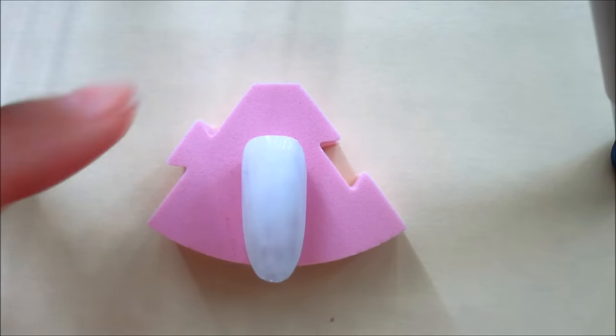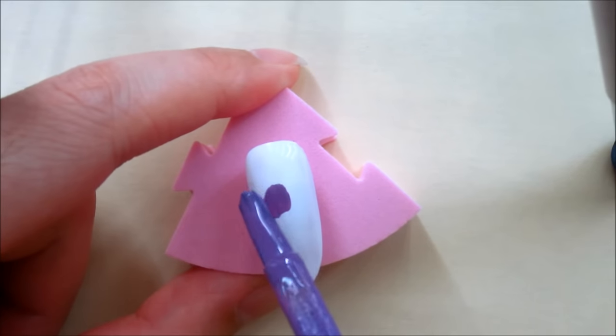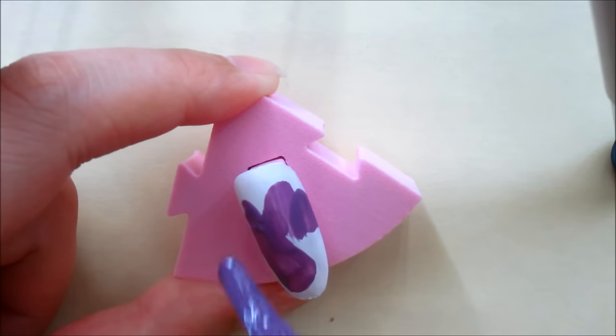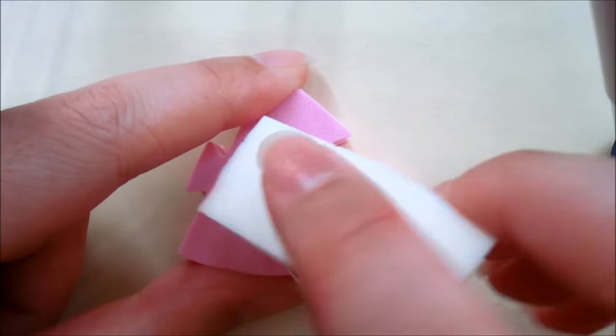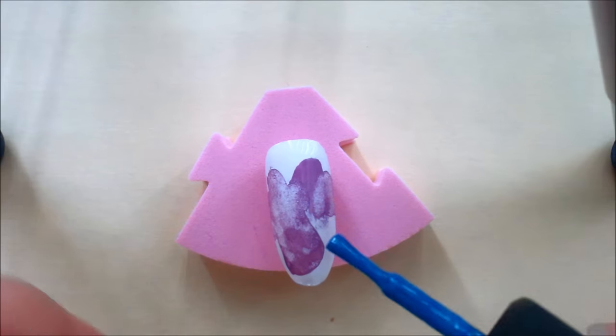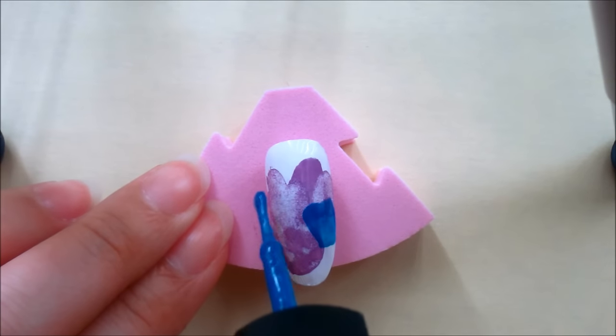Finally, for the galaxy nails, start off with a white base. Paint on a layer of purple, wait a few seconds and using a clean sponge, lightly press onto the purple. This will give the nail polish a watercolor effect.